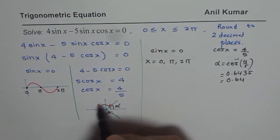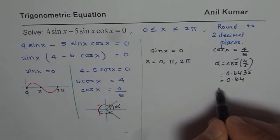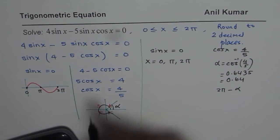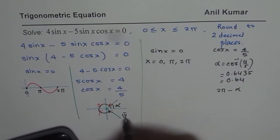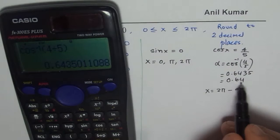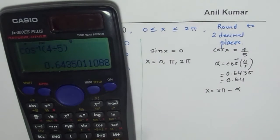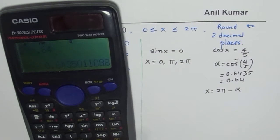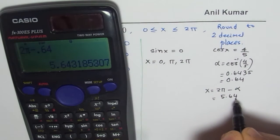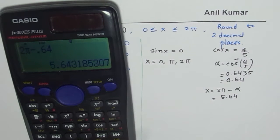As you can see here, alpha, the other answer is 2 pi minus alpha. That will be this value when it is in quadrant 4. Perfect. So how much is 2 pi? So x value of 2 pi minus alpha. So we will do 2 pi minus 0.64. We get 2 pi minus 0.64 is equal to, we get this equals to 5.643. I am rounding it to two decimal places, 5.64.